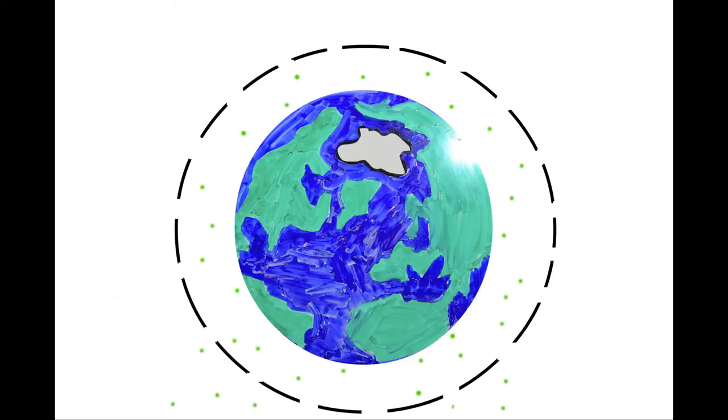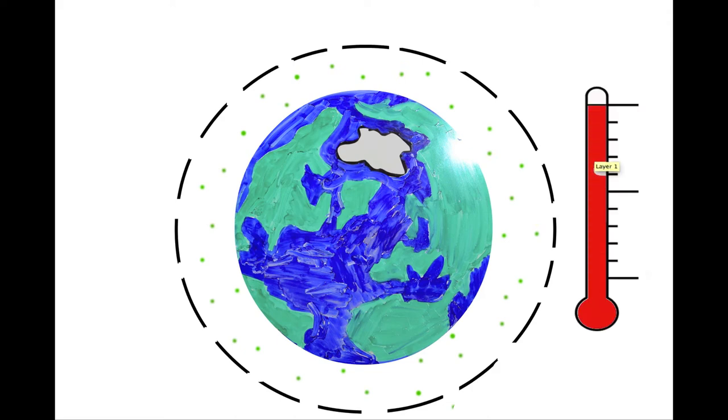Greenhouse gases are also released by deforestation and farming practices. All of these extra greenhouse gases mean that more energy will stay in the atmosphere and warm the surface of the Earth.